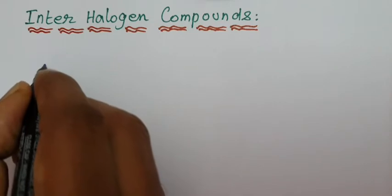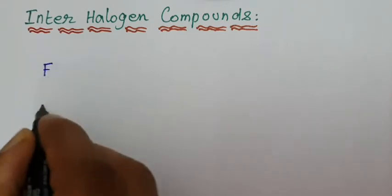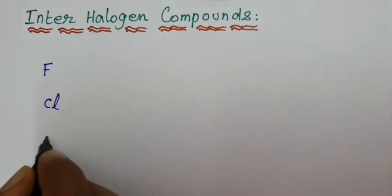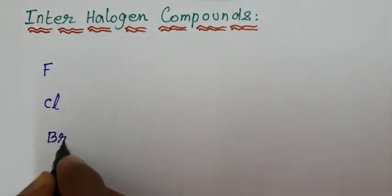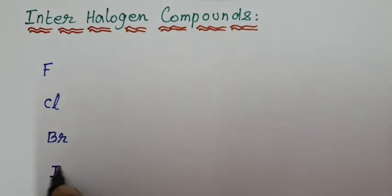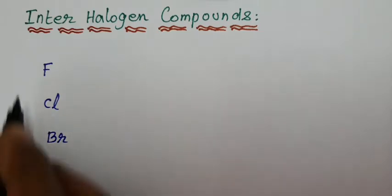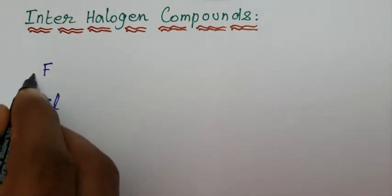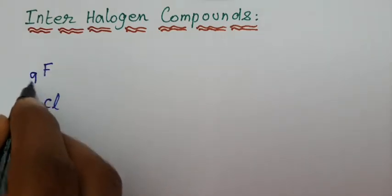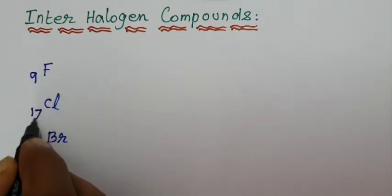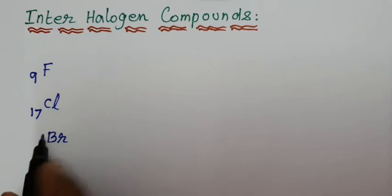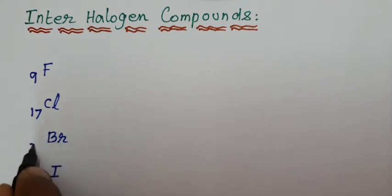The halogens are fluorine, chlorine, bromine, iodine, and one more — astatine. The atomic number of fluorine is 9, chlorine 17, bromine 35, iodine 53.